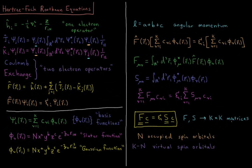We have FC = ESC. F and S are both k-by-k matrices, where we have k basis functions. This is our linear variational method applied to the Fock operator — so instead of HC = ESC, our Hamiltonian here is the Fock operator acting on this coefficient vector, which contains the coefficients that tell us how the atomic orbital basis functions combine to represent our atomic orbitals. This is the matrix Schrödinger equation for the Fock operator, which arises in Hartree-Fock whenever we represent our atomic orbitals as a linear combination of basis functions.